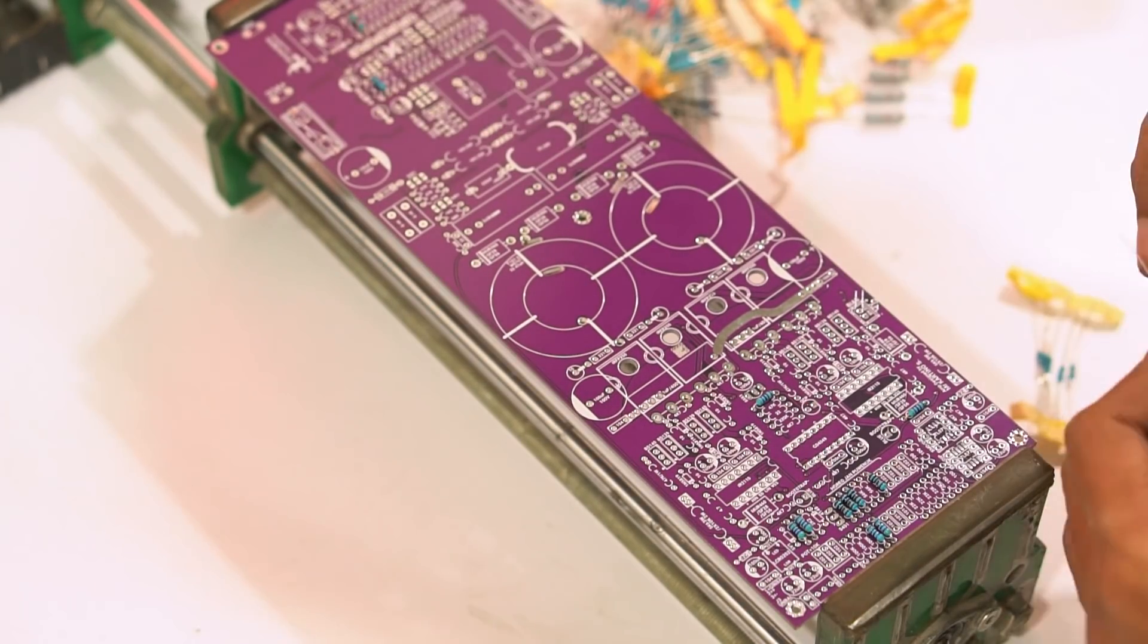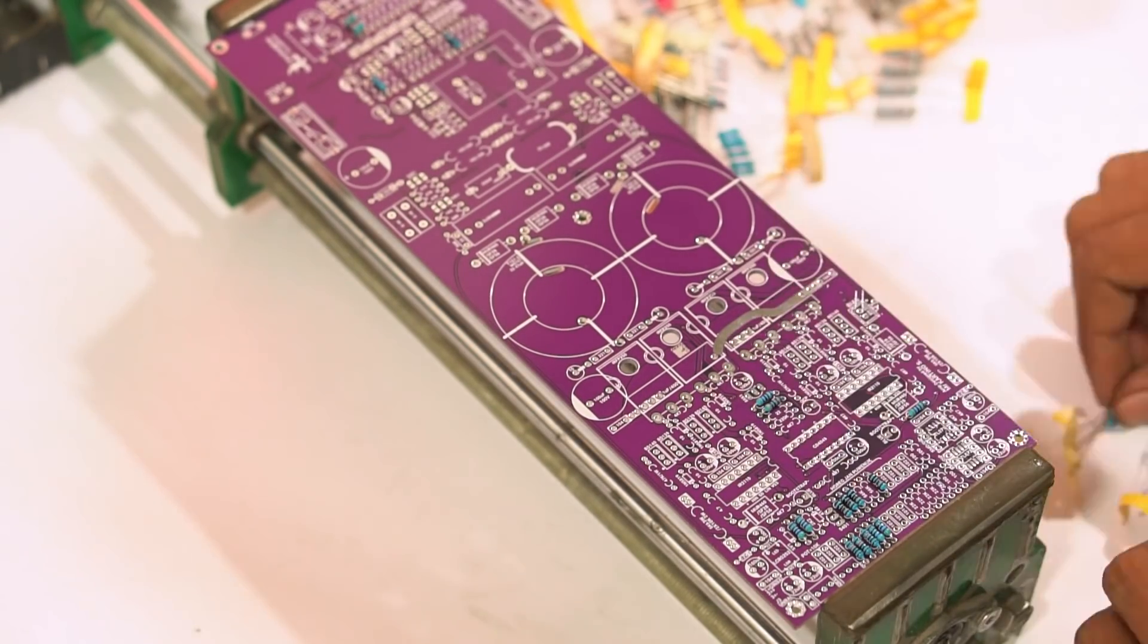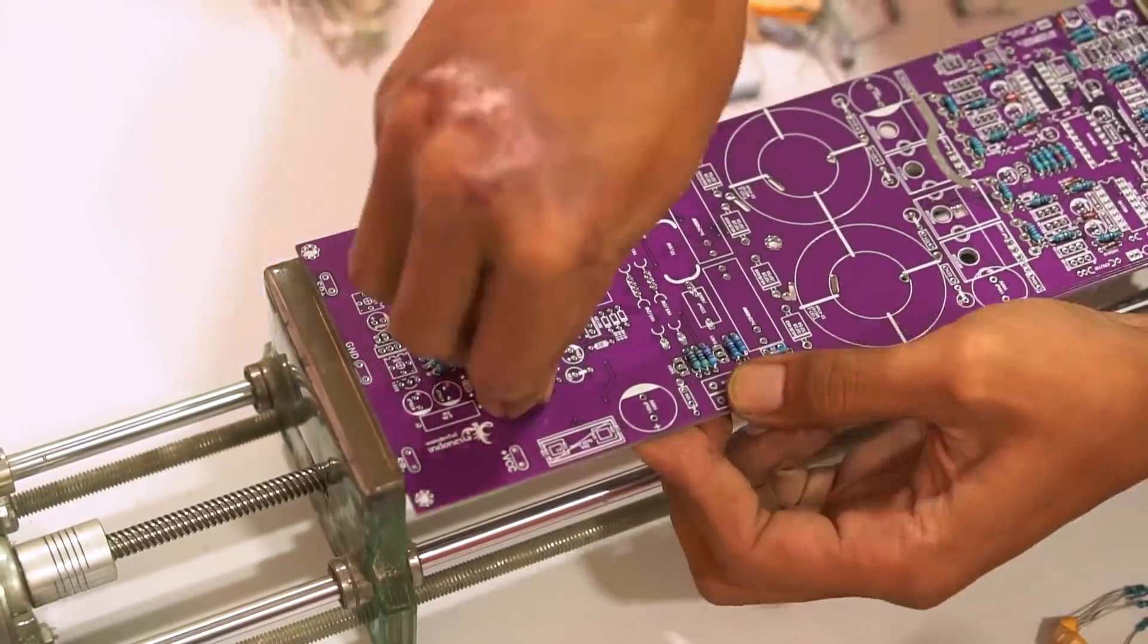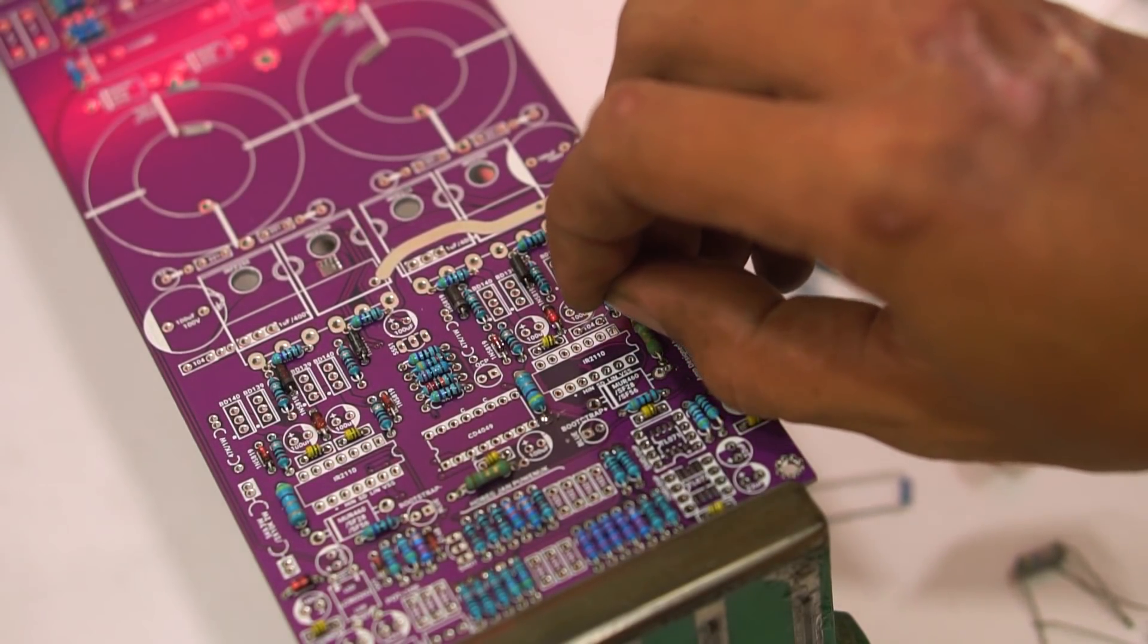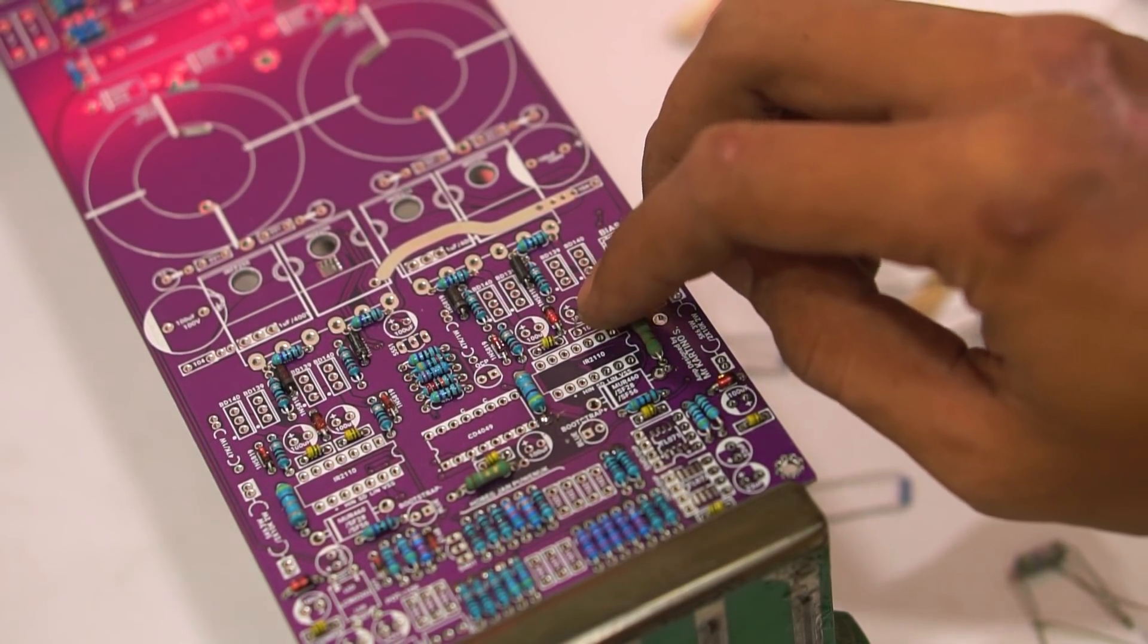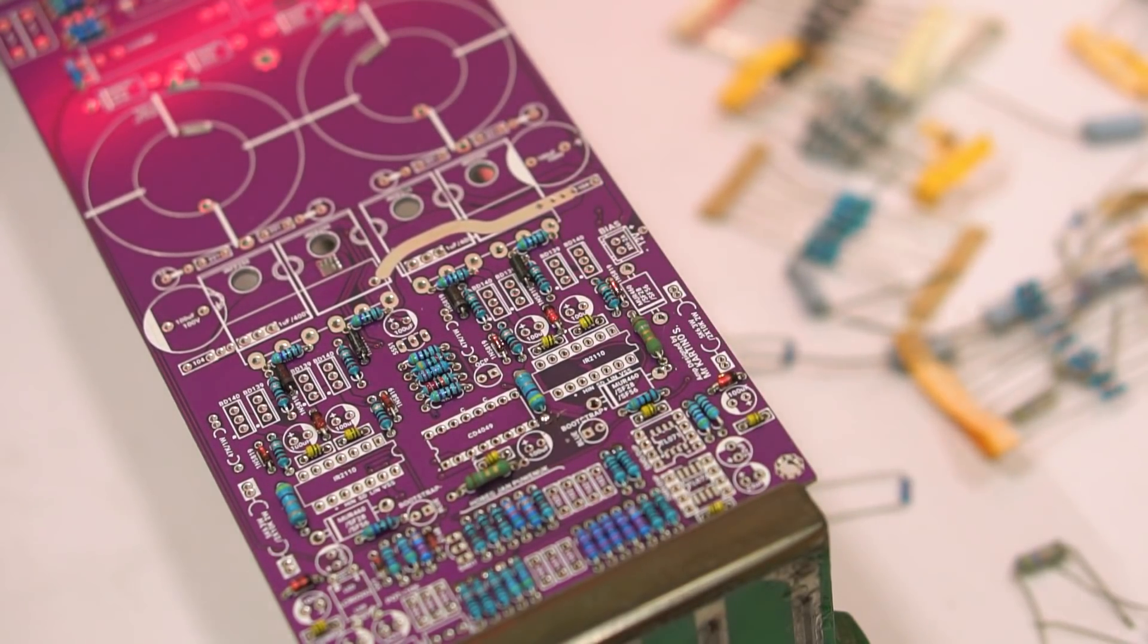First, install components according to the labels on the PCB. I'll install the resistors and diodes first. For the 100n capacitor, I'm using the axial model or resistor-shaped type, so don't mistake this for a resistor - it's a 100n capacitor.